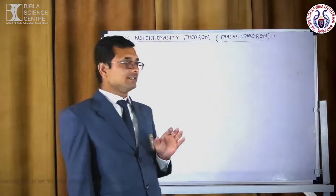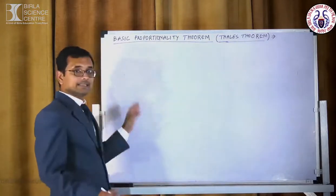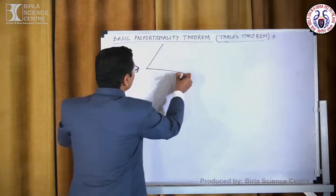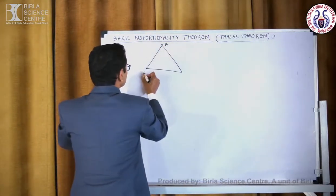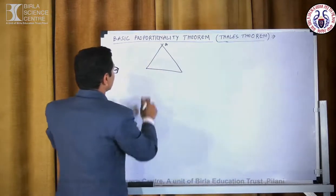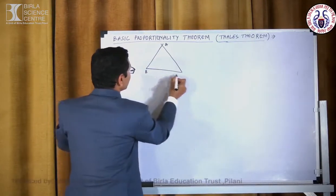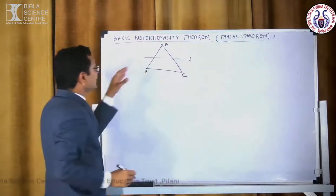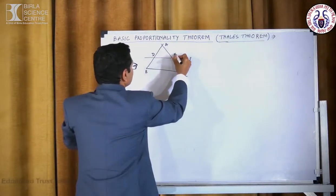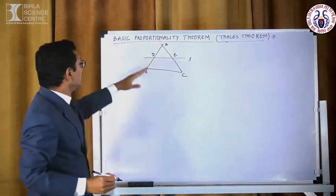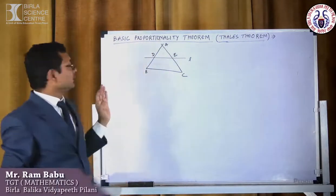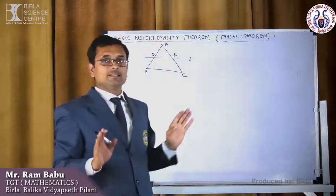According to this theorem, the statement is: if a line is drawn parallel to one side of a triangle and intersects the other two sides at two distinct points, then those two sides will be divided in the same ratio.